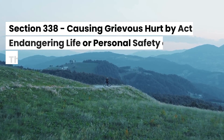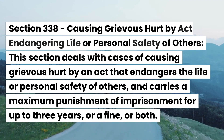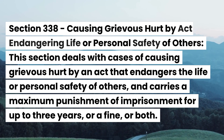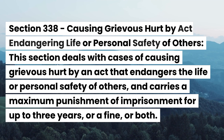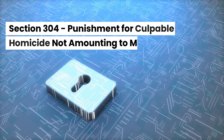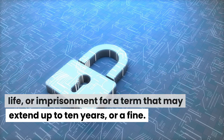Section 338 — Causing grievous hurt by act endangering life or personal safety of others. This section deals with cases of causing grievous hurt by an act that endangers the life or personal safety of others, and carries a maximum punishment of imprisonment for up to three years, or a fine, or both. Section 304 — Punishment for Culpable Homicide Not Amounting to Murder. This section carries a maximum punishment of imprisonment for life, or imprisonment for a term that may extend up to ten years, or a fine.